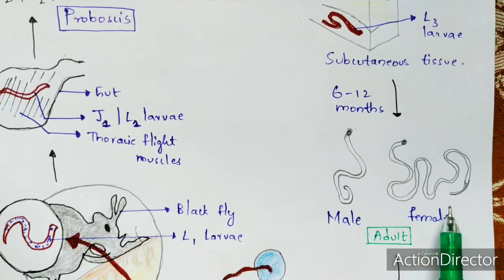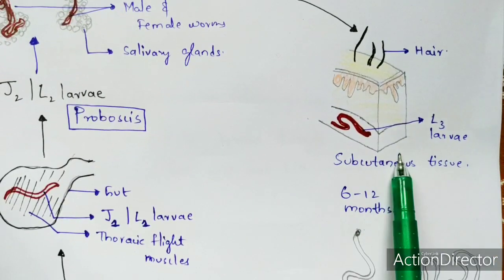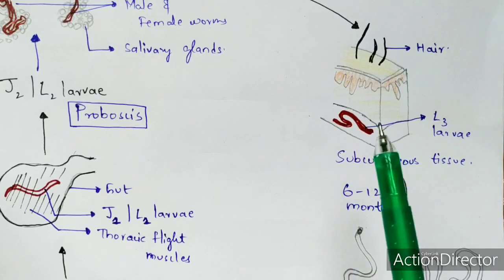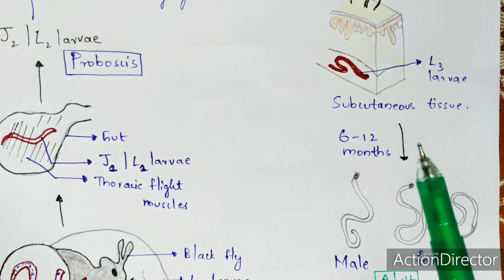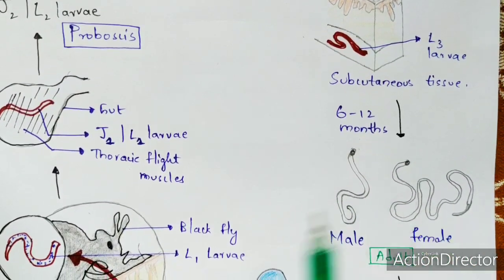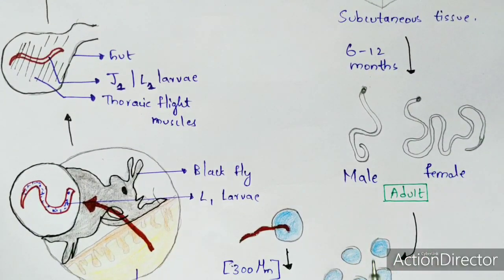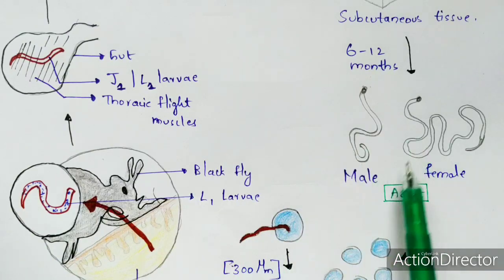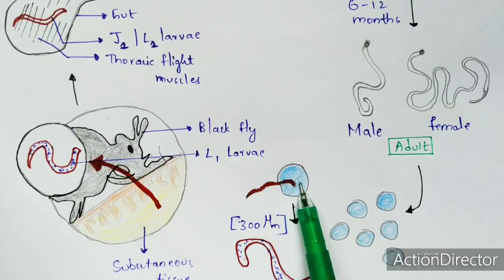Within 6 to 12 months, the L3 larvae settled in the subcutaneous tissue mature and transform into adult male and female worms. Both male and female worms enter the subcutaneous tissue in large numbers, and once mature, they begin mating and producing eggs.